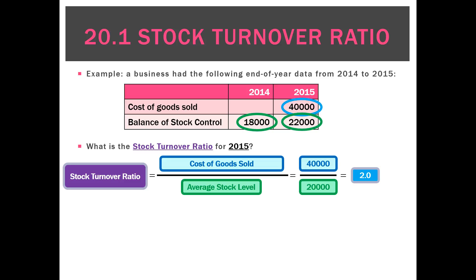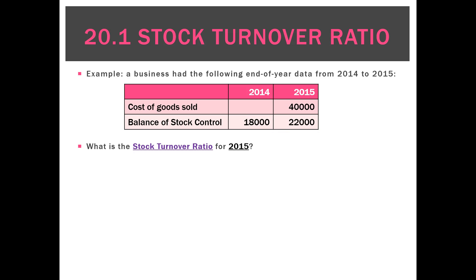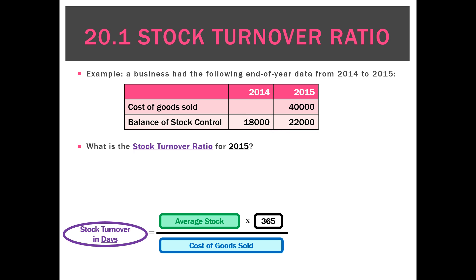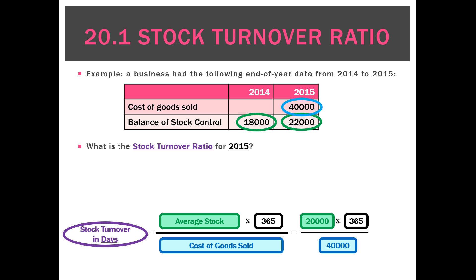A better ratio in terms of understanding is the stock turnover in days, because it gives a figure that means something straight away. We take the average stock of 20,000, multiply it by 365, and divide by cost of goods sold. Doing that we get 183 days, meaning it takes 183 days on average to sell out our stock.